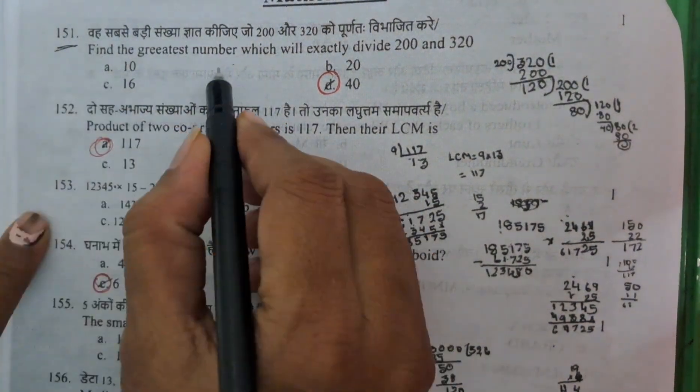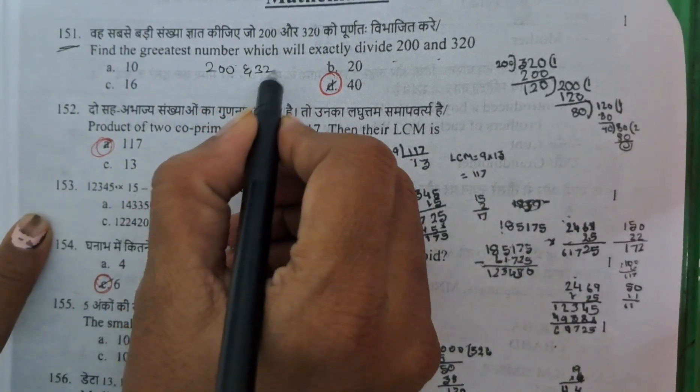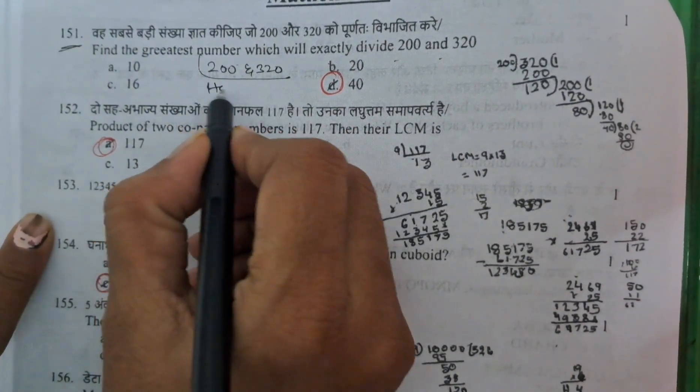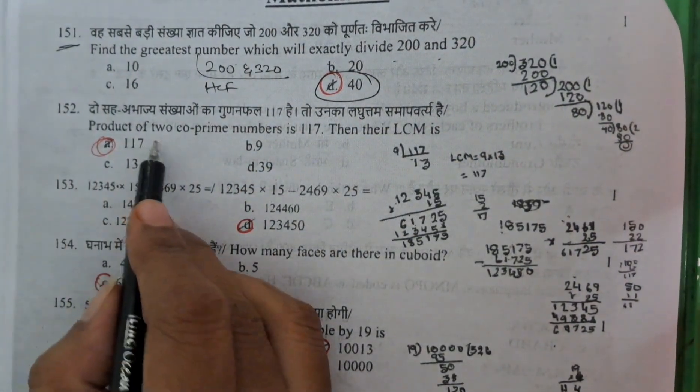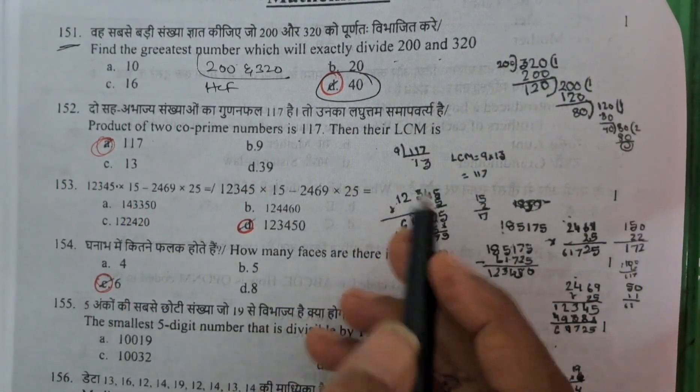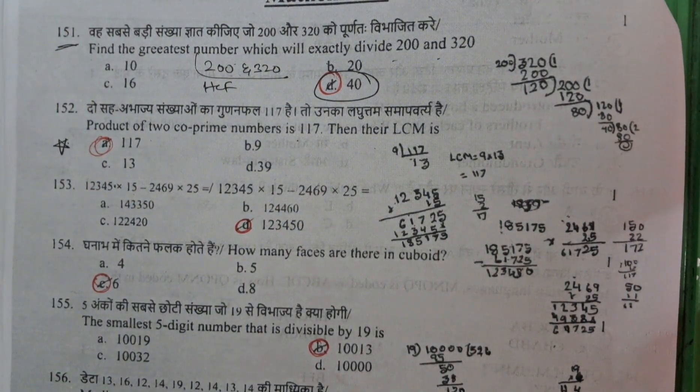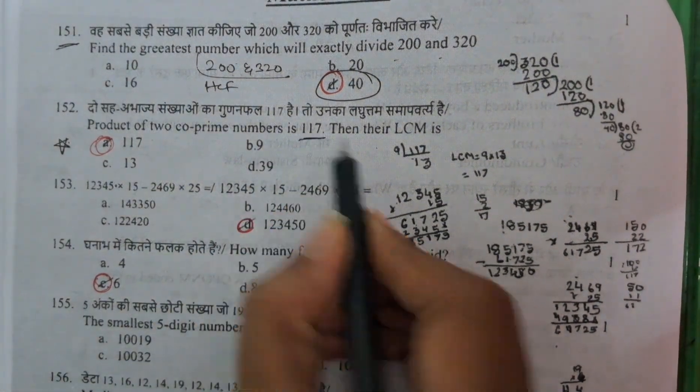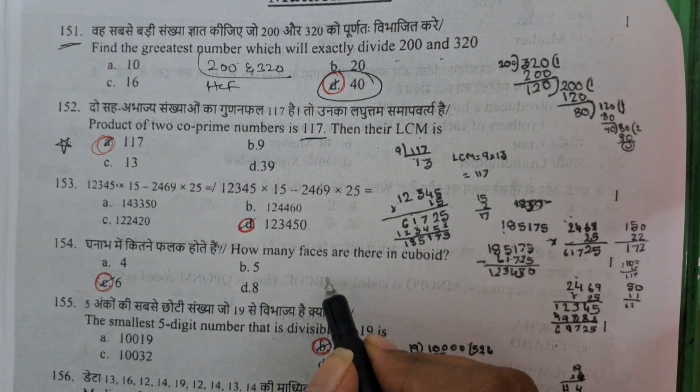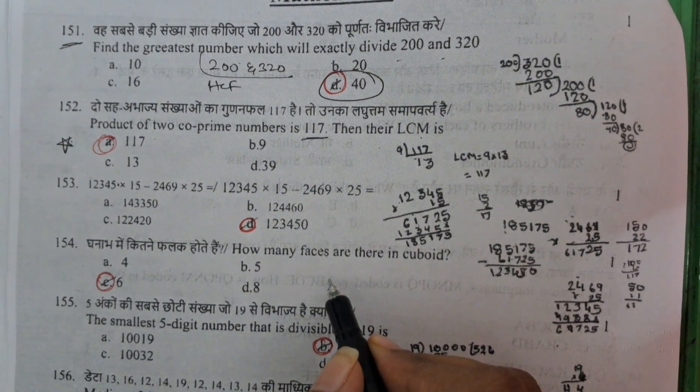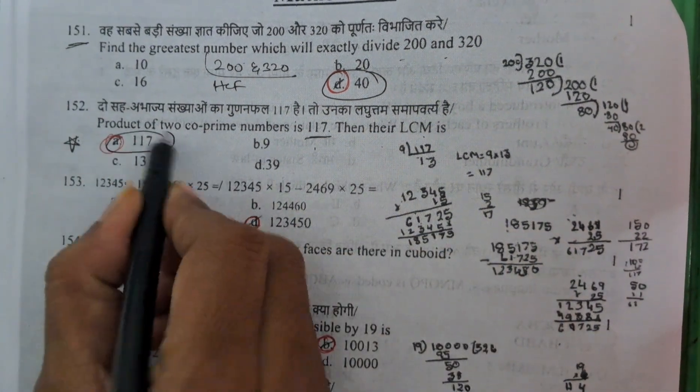First question 151, the greatest number which is exactly divisible by 200 and 320. Greatest divisible means we need to do the HCF. If you do the HCF, the answer is 40. And product of 2 co-primes is 117, then their LCM is?